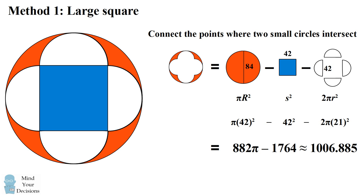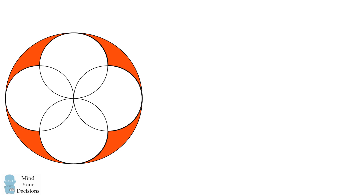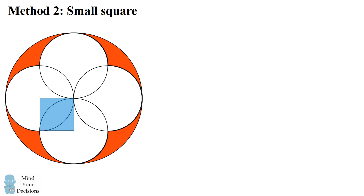This method is nice because we don't have to evaluate the region in which two of the smaller circles overlap. In the next method, we'll go ahead and do that explicitly. What we'll do is consider this square. We'll connect the center of one of the smaller circles to the points in which two adjacent circles intersect. The area where these two circles intersect can be found as follows: it will be equal to the area of two quarter circles from each of these smaller squares minus the area of this square.